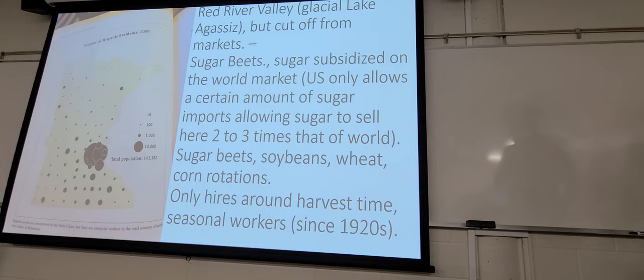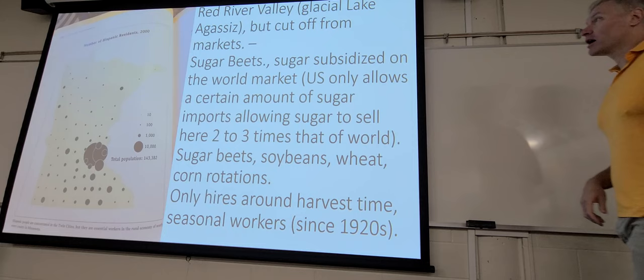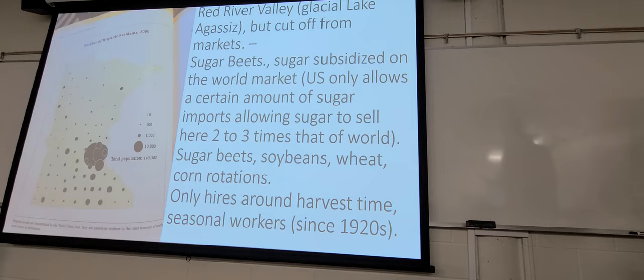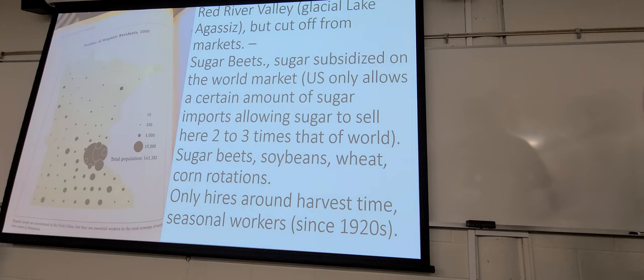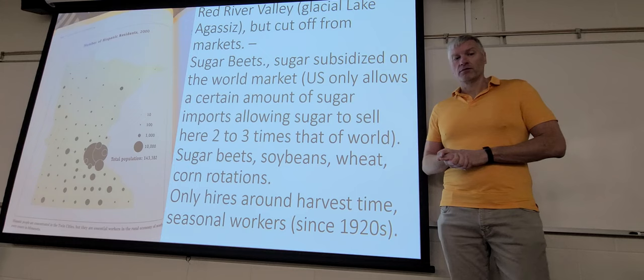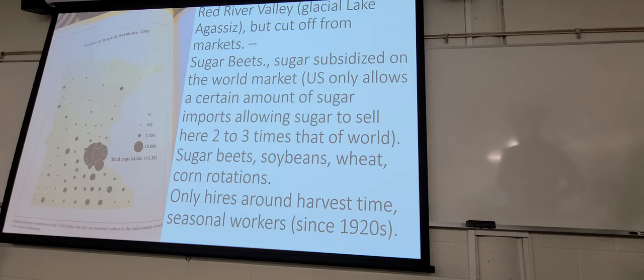Sugar beets, one of the main reasons sugar beets do as well as they do is because the United States has policies that do not allow a certain amount of sugar to be imported into the country. That keeps our prices higher, about two to three times what the sugar prices would otherwise be if we had completely open markets.